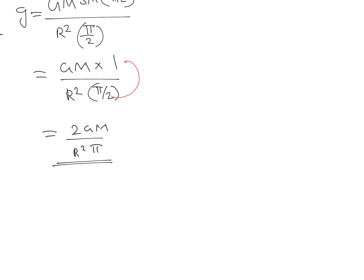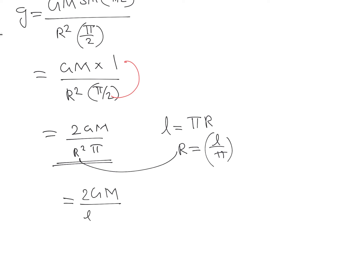In this question the length L is given but not the radius. For a semicircle, the arc length equals half the circumference: L = πr, so r = L/π. Substituting into the equation: 2Gm divided by (L²/π²) times π. The pi terms cancel, giving a final result of 2Gm divided by L².